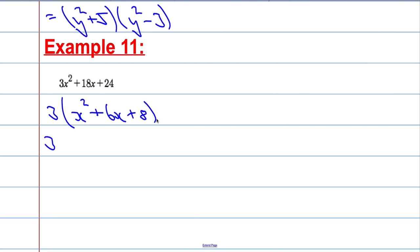And then I can factorise this as normal. So x and x, two numbers that multiply to make 8 but add to make 6. 4 and 2 will do the job here. And hence, we factorise this expression fully.